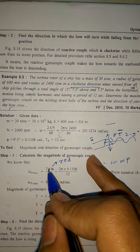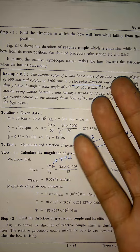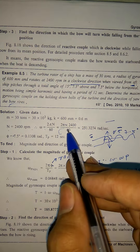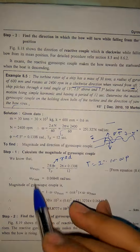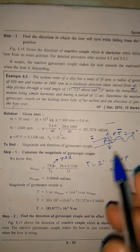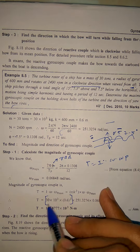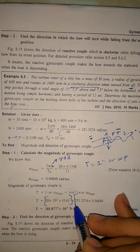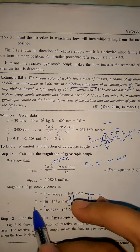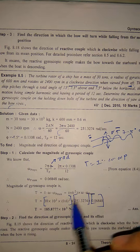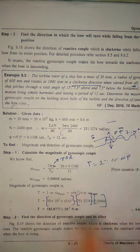So omega_P is in radians per second giving you angular velocity. And I equals mk-squared. So the gyroscopic couple T equals mk-squared times omega times omega_P max. You get an answer in Newton meters. This is the final answer for this numerical worth 10 marks.